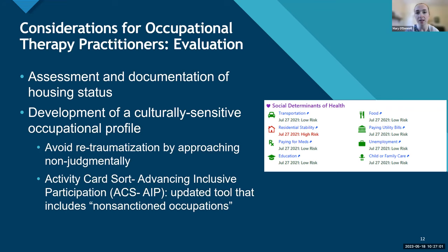Having housing status documented means I might change the questions I'm asking about the home environment to be more inclusive of what a home environment might look like for different folks. When conducting our evaluation, we also want to have a culturally sensitive occupational profile, using inclusive language if we know a family or individual is experiencing homelessness. So instead of asking 'how many stairs do you have to get into your house,' we change that language to be broader and more inclusive — for example, 'tell me about where you're staying' or 'tell me about how you get in and out of the building.'